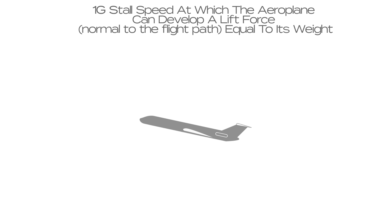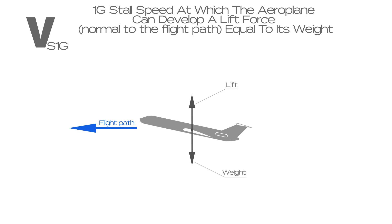A 1g stall speed at which the aeroplane can develop a lift force that is normal to the flight path and equal to its weight is represented by VS1g. This is the lowest speed at which the aeroplane can maintain 1g flight, which essentially means to maintain level flight.